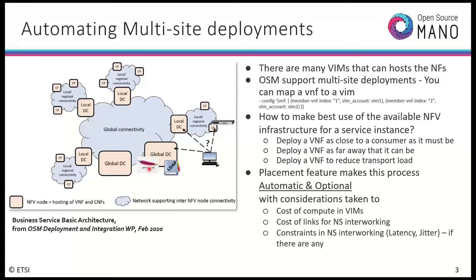But where do we put the virtual desktop? Should it go here, there, or somewhere else? The question is: how to make best use of the available infrastructure for a service instance? We can think in many dimensions — maybe we need to deploy a VNF as close to a consumer as it must be, or as far away as it can be, or place it to reduce transport load. The placement feature aims to make this process automatic and optional.